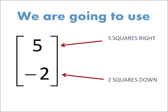In our example, the column vector is 5 minus 2, so we will be moving the shape 5 squares right and 2 squares down.